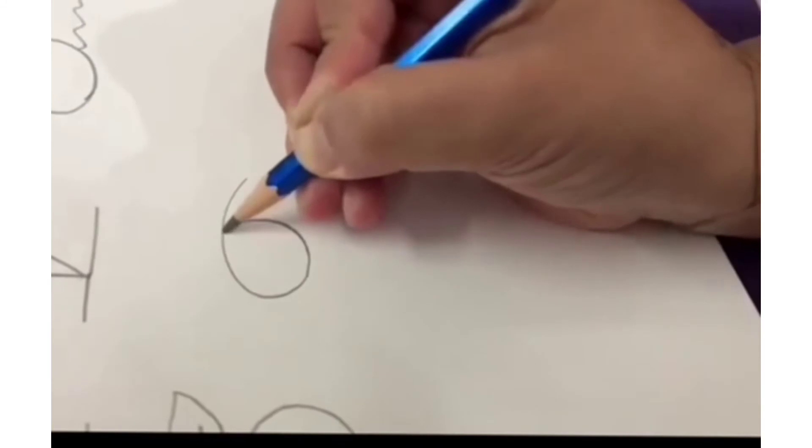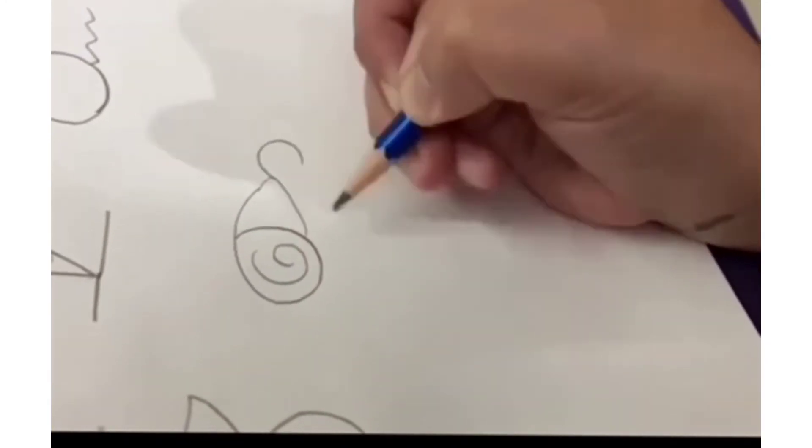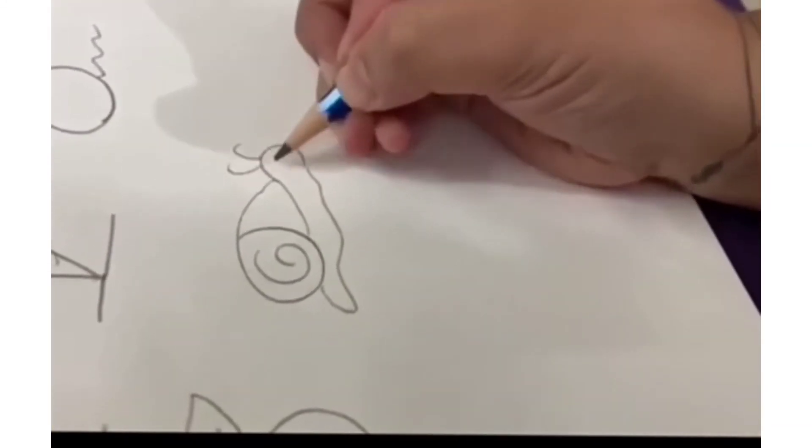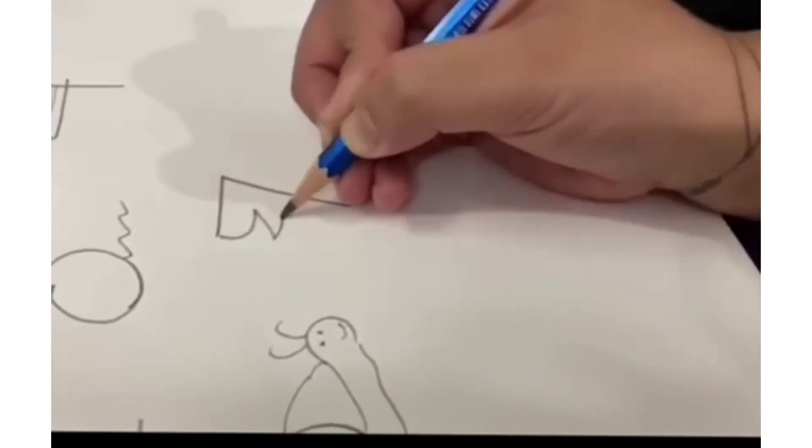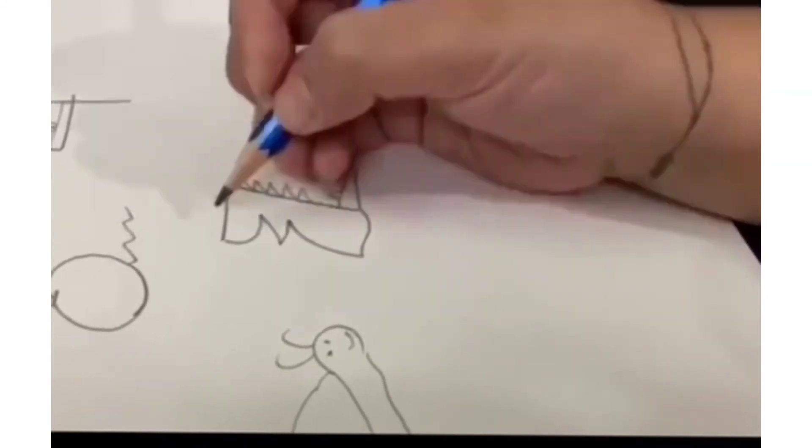What is this? It's a snail from the number 6. Number 7. What is this? It's a crocodile.